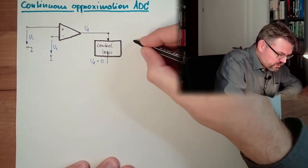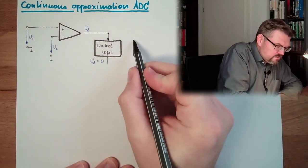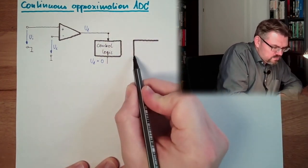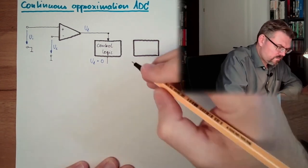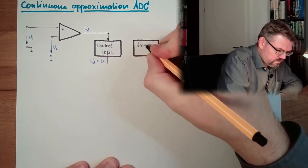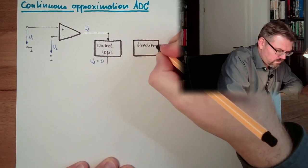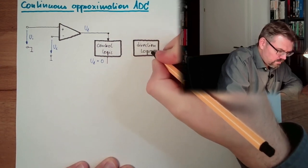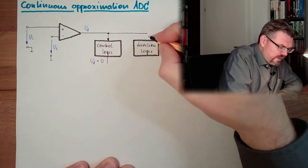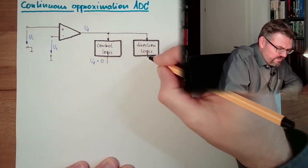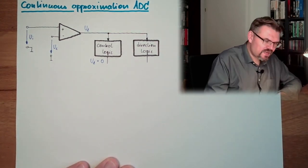Then we have a direction logic. This logic is always looking at Ud and telling if it's currently positive or negative, the sign.